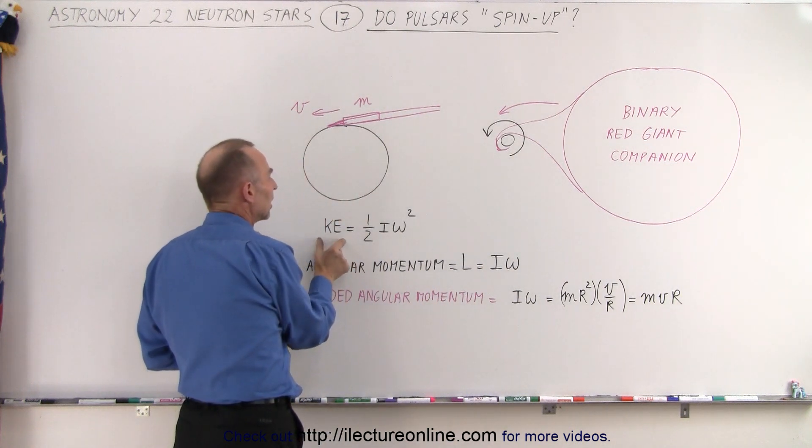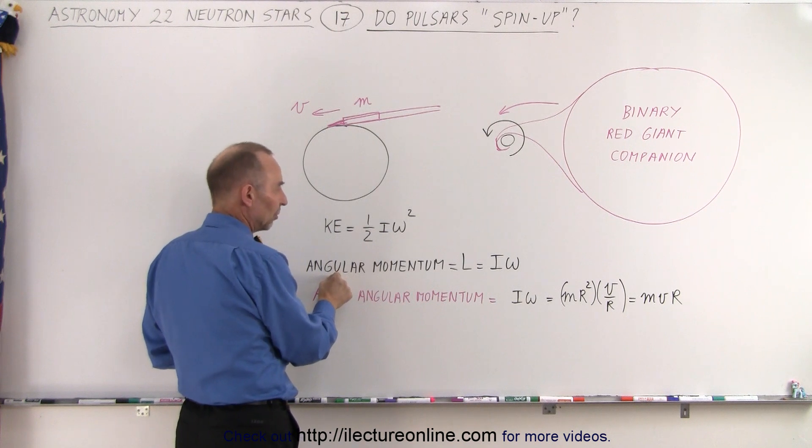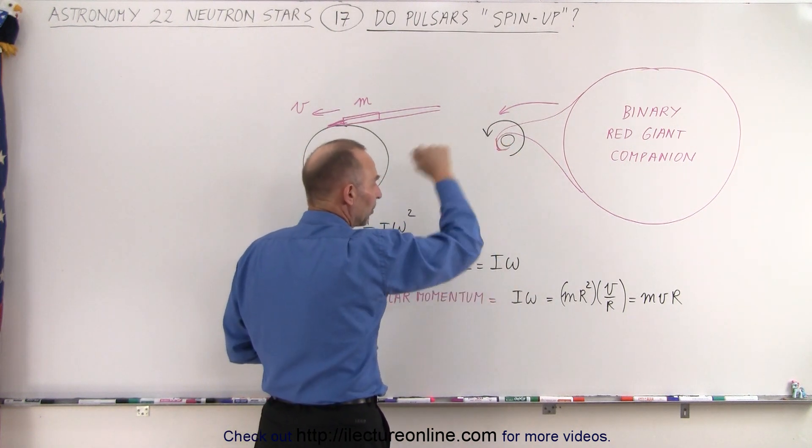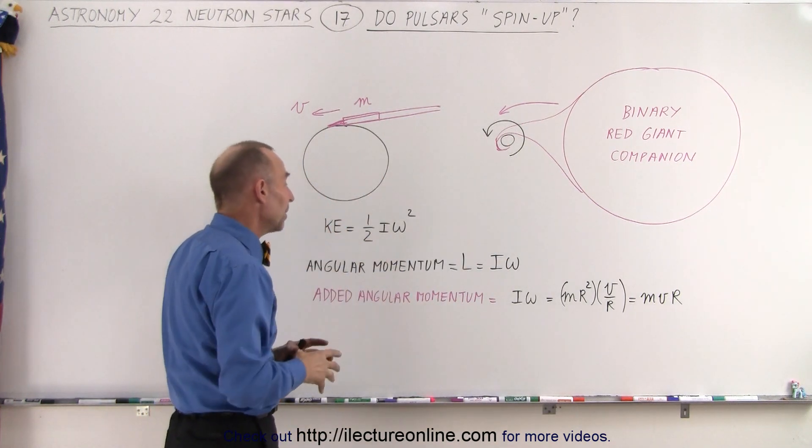So if the initial kinetic energy is one half I omega squared and the initial angular momentum is equal to the moment of inertia times the angular speed of the pulsar, then how much would the added material add to that angular momentum?